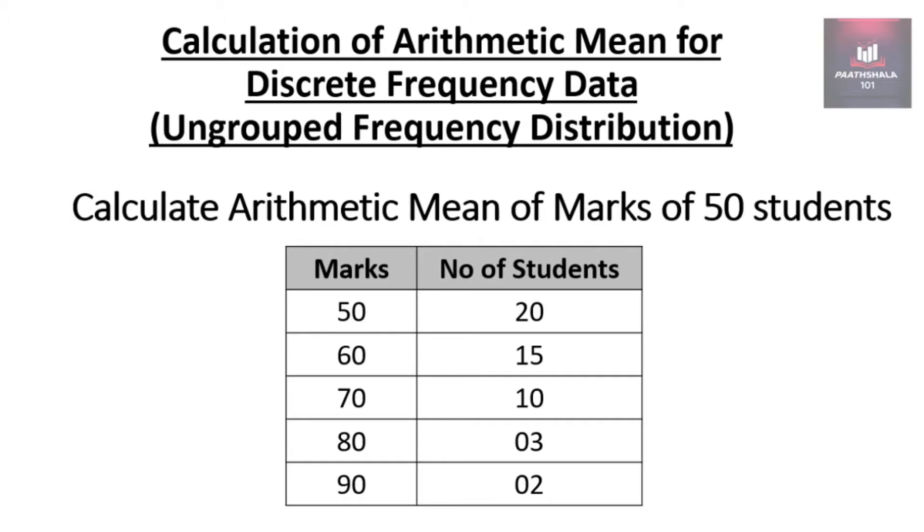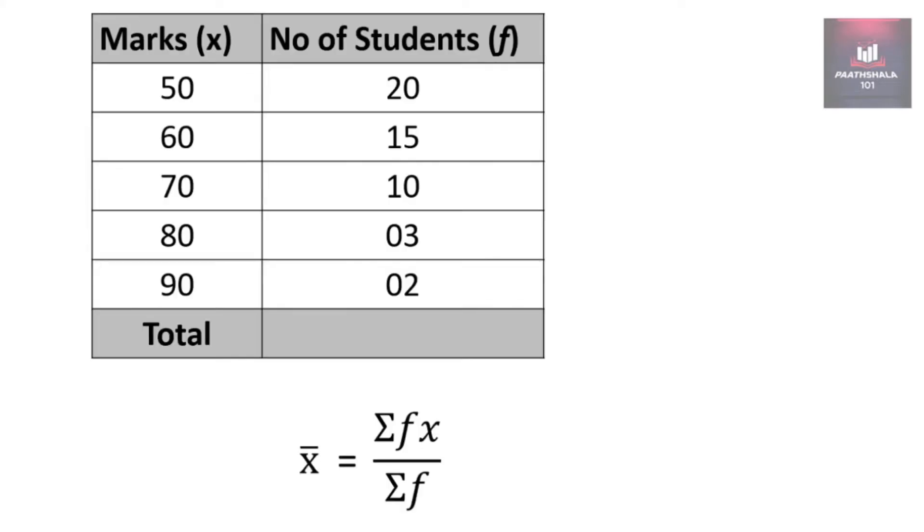Now we will calculate arithmetic mean for the same. The formula is x bar equal to summation fx upon summation f. So we will expand this table with one more column which is fx.